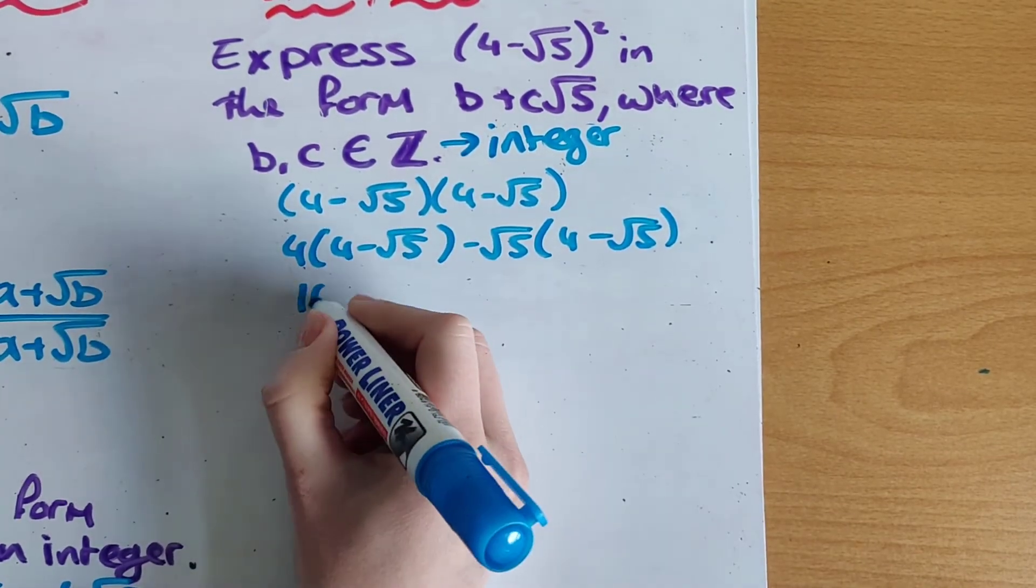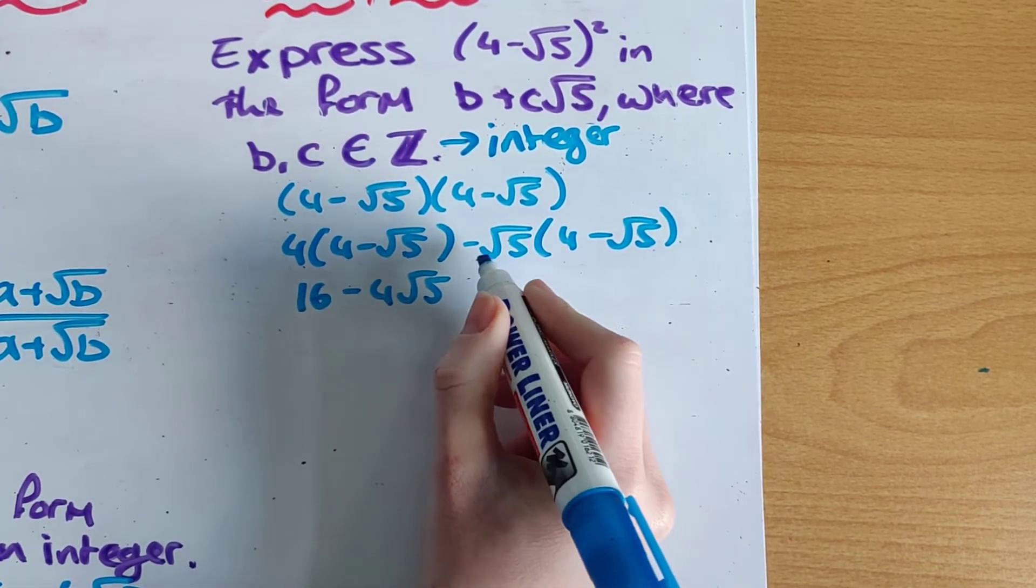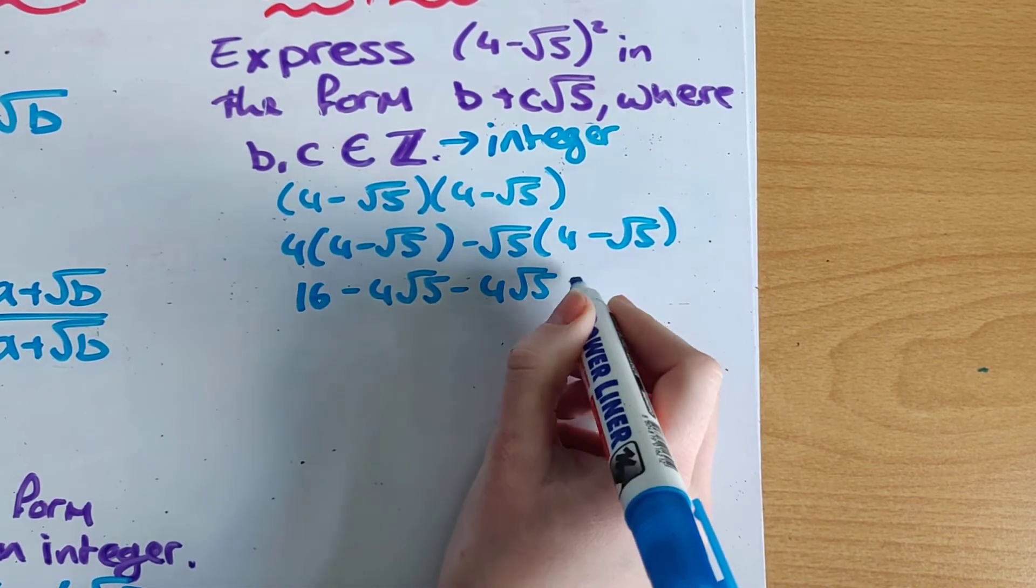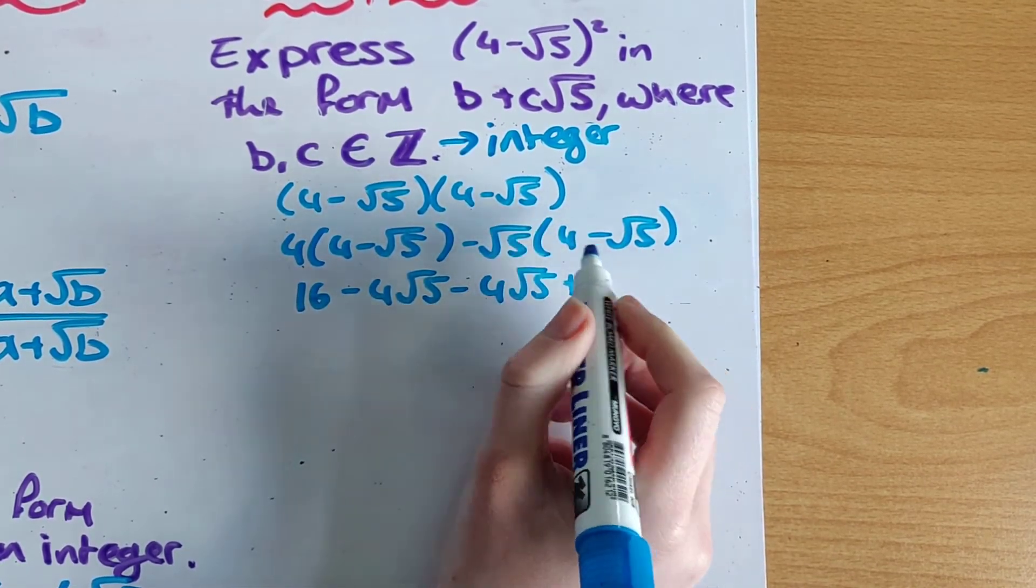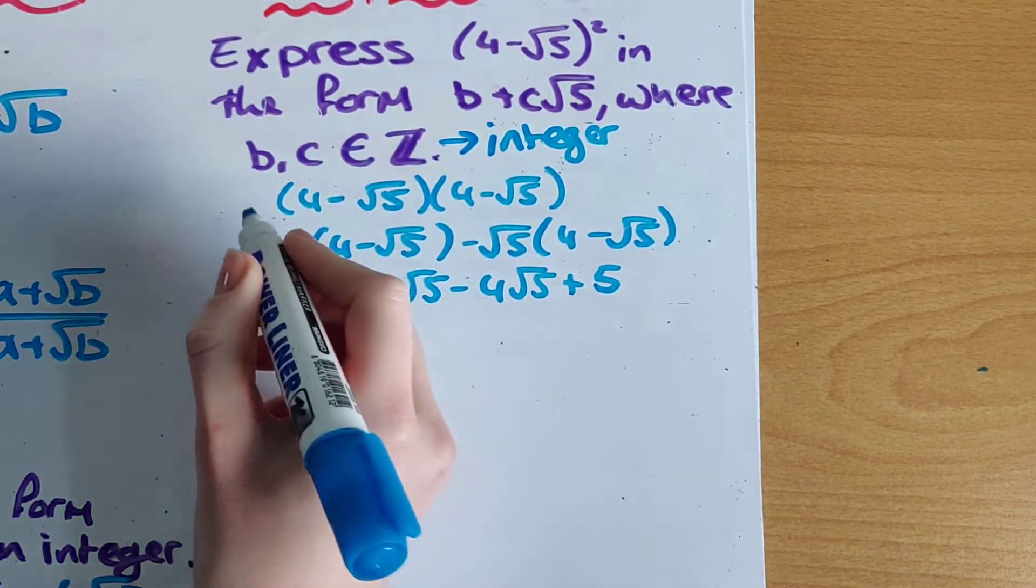So now we have 4 by 4 is 16. 4 by minus root 5 is minus 4 root 5. Minus root 5 by 4 is minus 4 root 5. A minus by a minus is a plus. And root 5 by root 5 my roots cancel and leave me with the number underneath which is just 5.